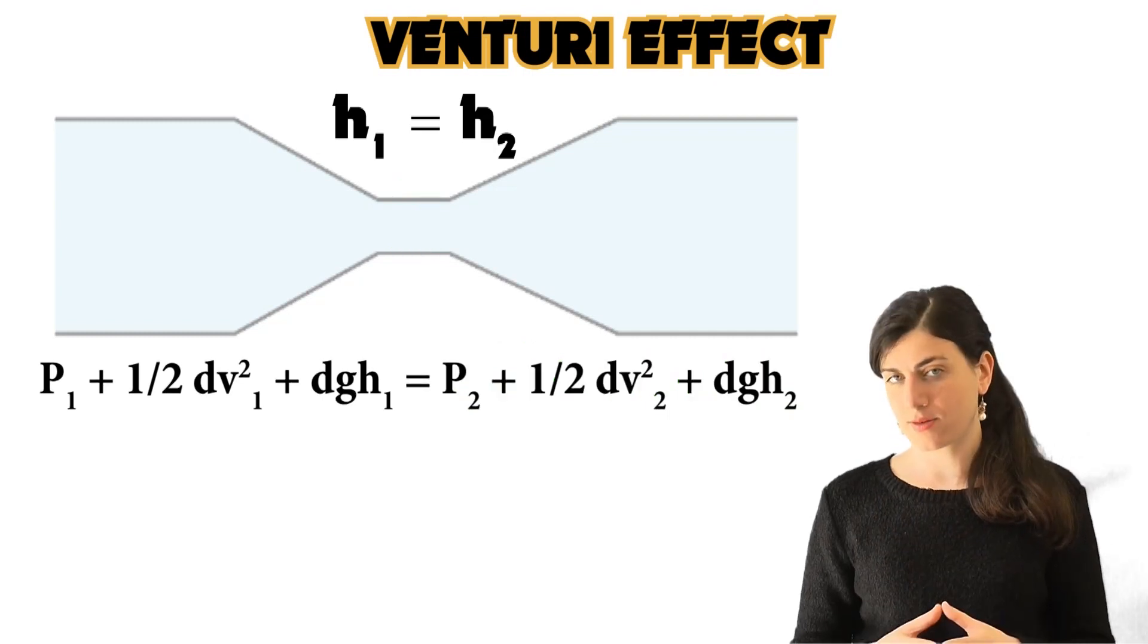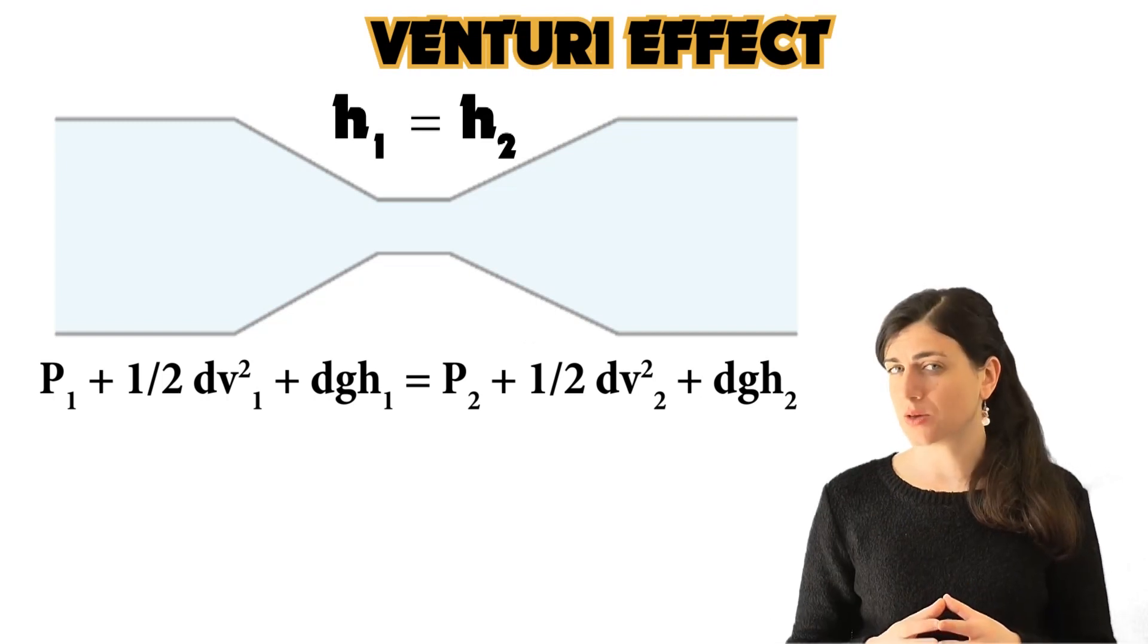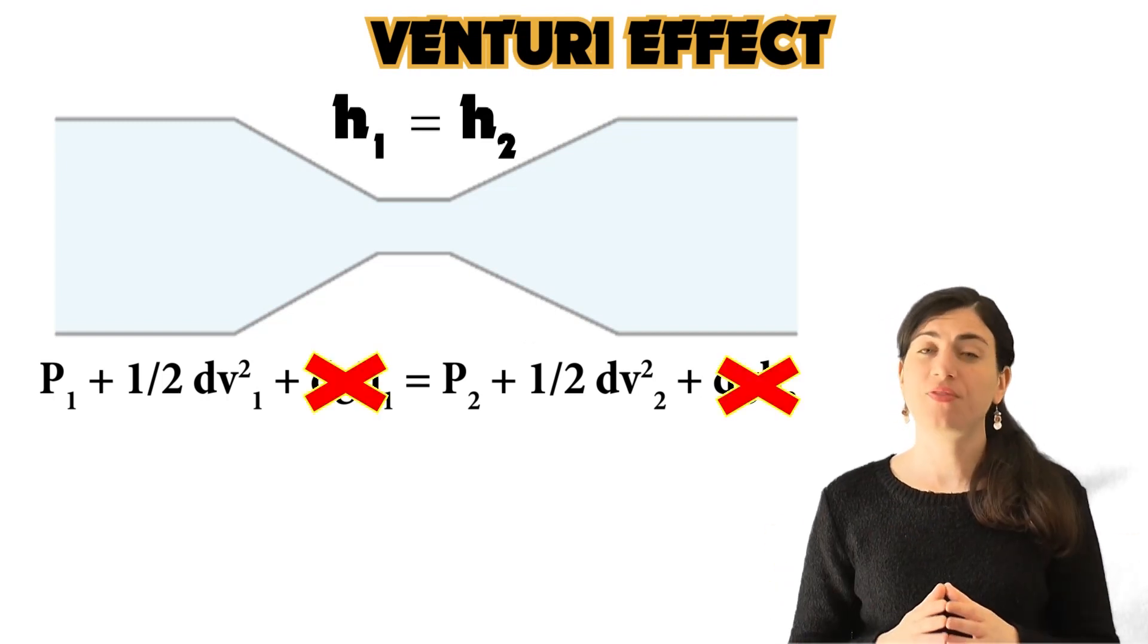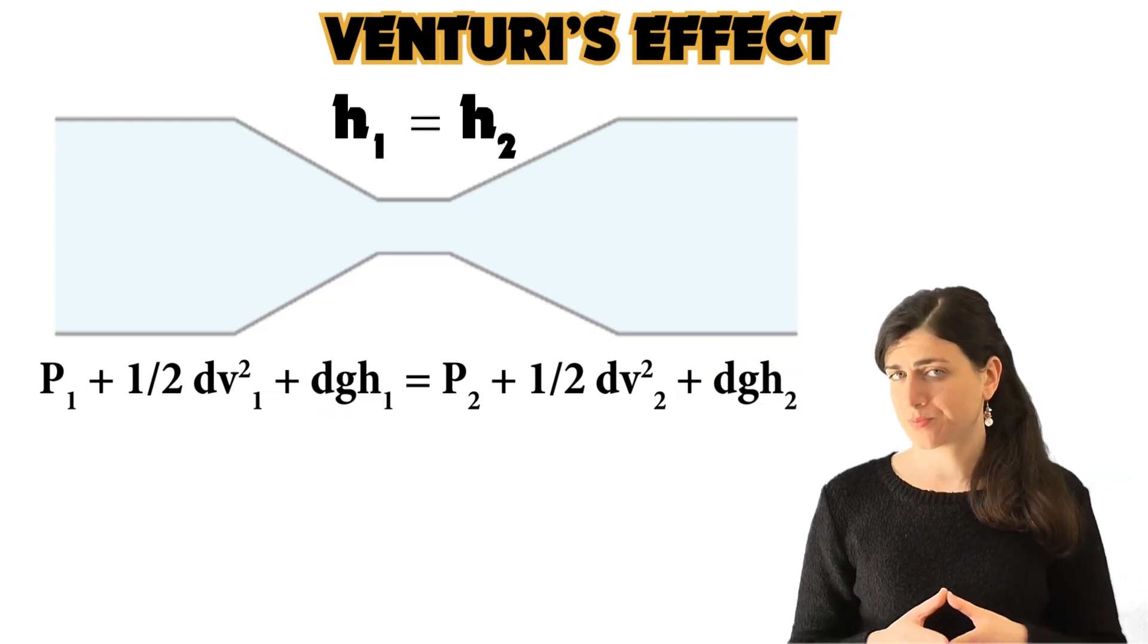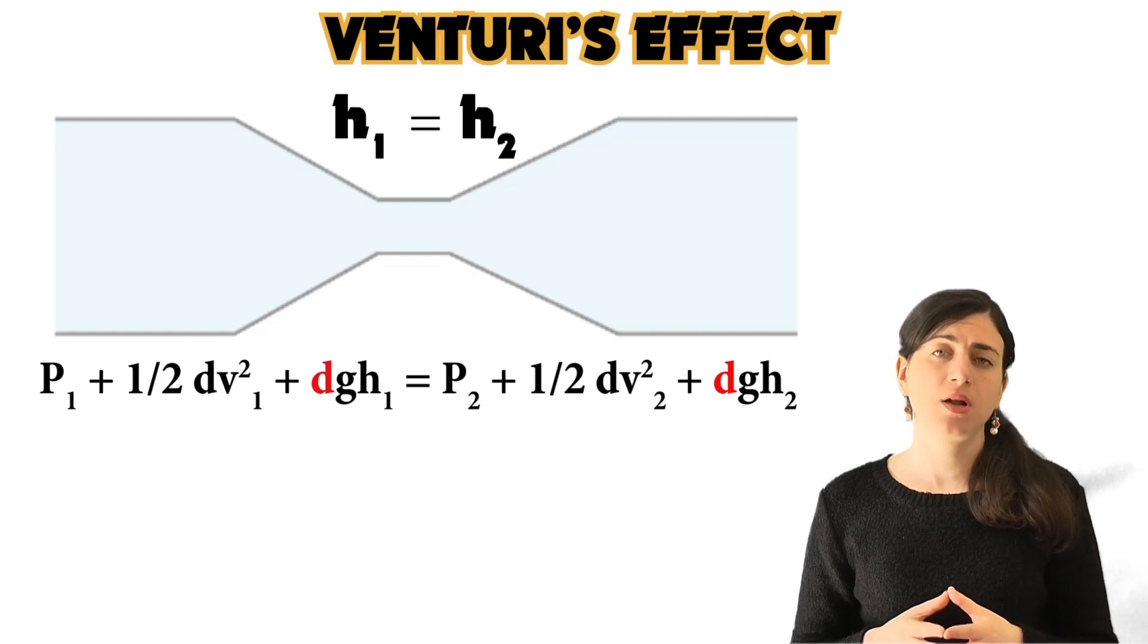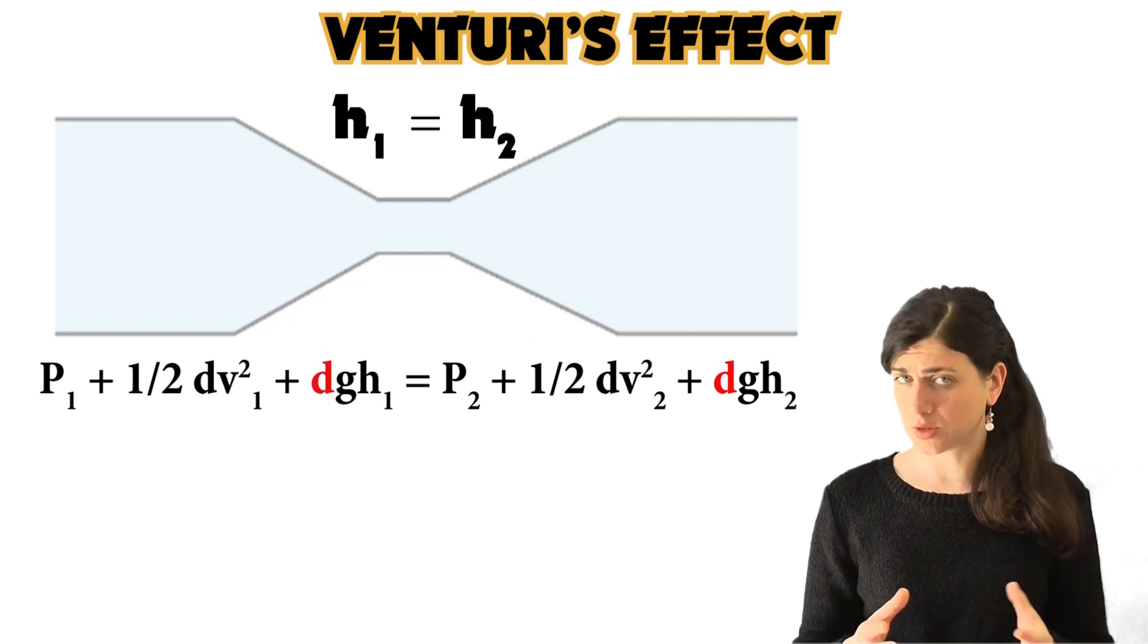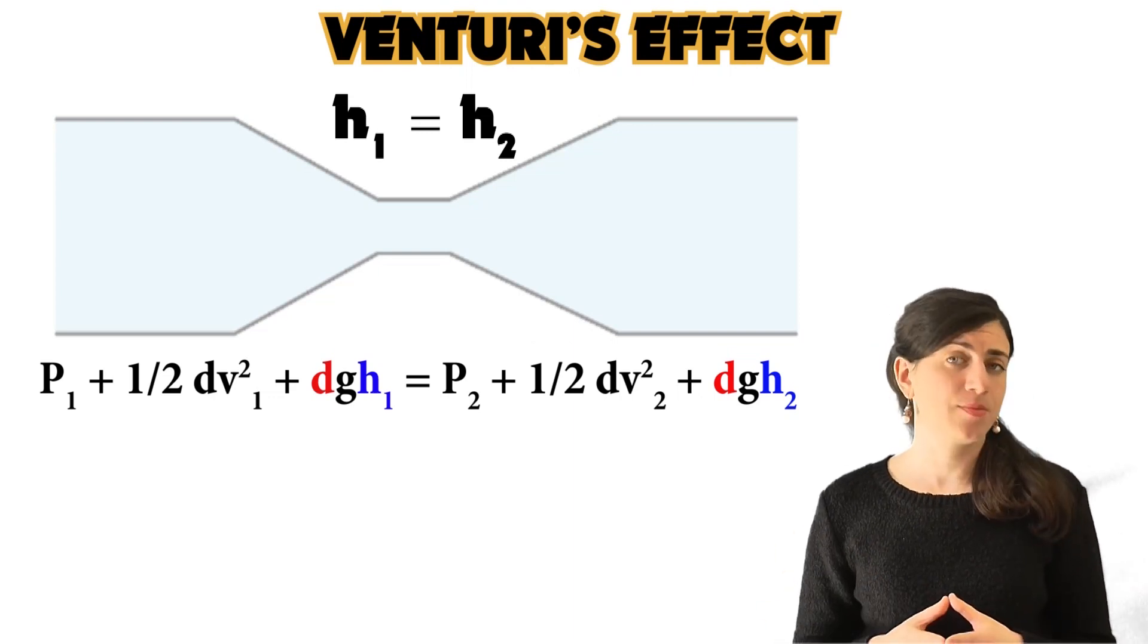Now, if we have that H1 equals H2, as you can see we can erase the final terms of this equation, because both are the same. In fact, density is the same, because we are dealing with the same liquid, in this case water. H1 equals H2, so they are both the same.